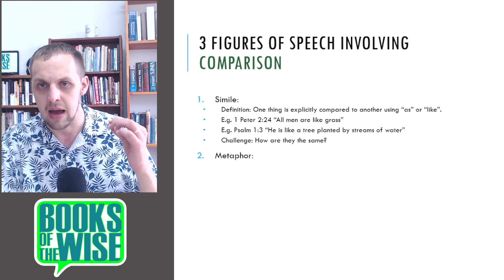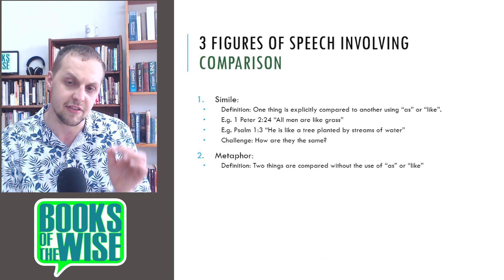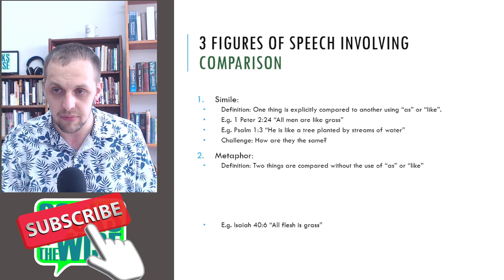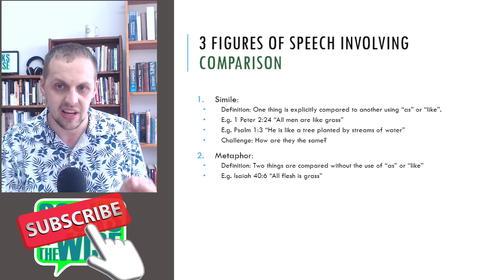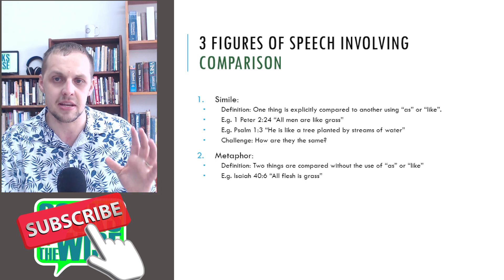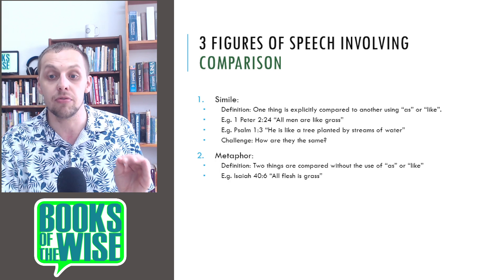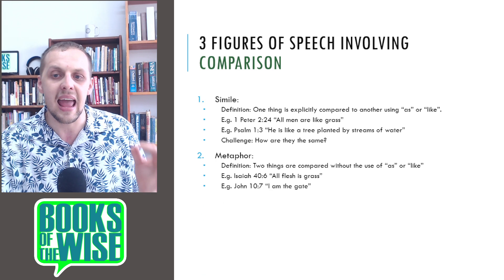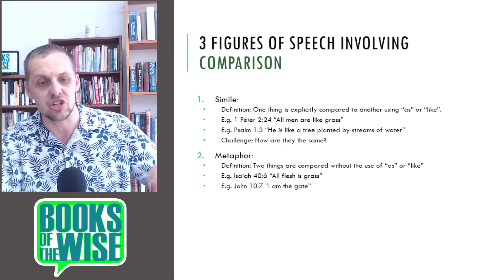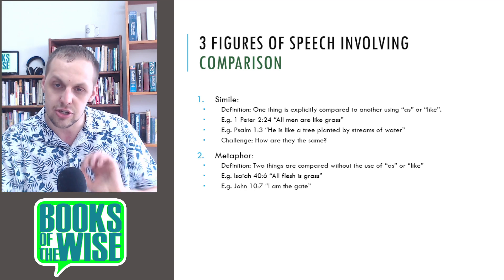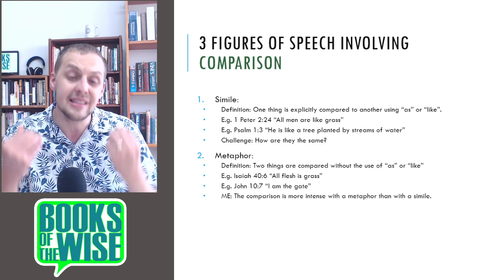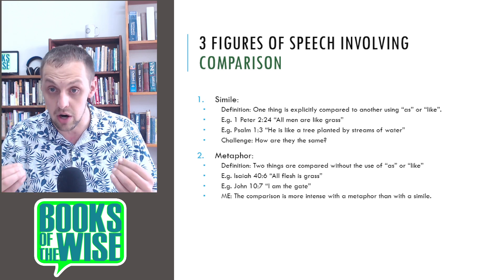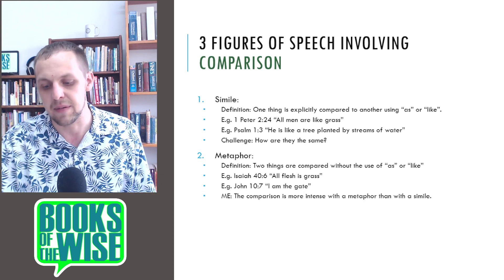The next figure of speech involving comparison is a metaphor. A metaphor is when two things are compared without the use of as or like. For example, Isaiah 40:6: all flesh is grass — as opposed to the simile all men are like grass. John 10:7: I am the gate. Jesus didn't say I am like a gate; he said I am the gate of the sheep. The comparison is more intense with a metaphor than with a simile — the comparison is tighter.